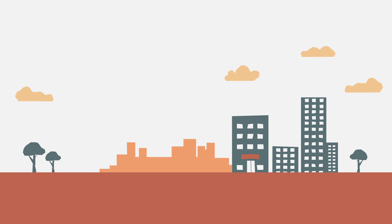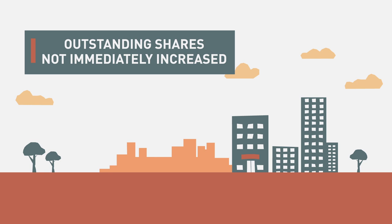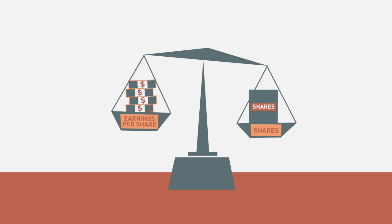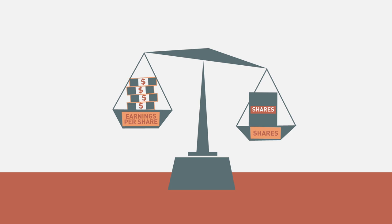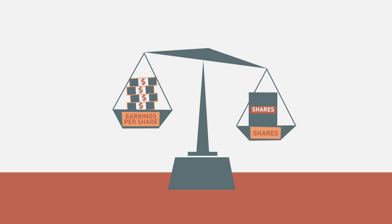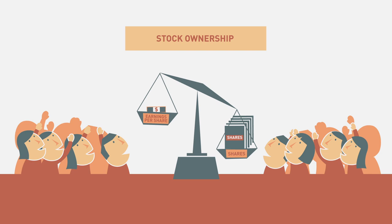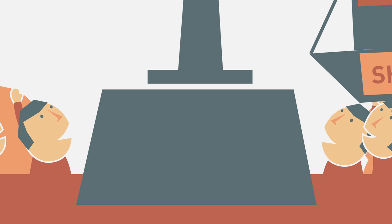Another advantage to issuing convertible bonds as opposed to common stock is that doing so does not instantly increase the issuer's number of outstanding shares, which would otherwise reduce earnings per share. Of course, this initial benefit can later become a disadvantage if bondholders convert their bonds to common stock. Corporations also run the risk that a sizable number of simultaneous conversions could have a significant impact not only in terms of earnings per share, but also in terms of voting rights that come with common stock ownership, which could effectively alter company control.